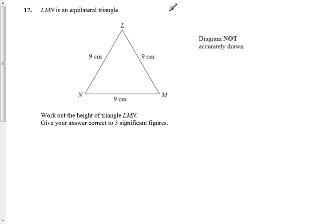Okay, so here we go with the problem. We've got an equilateral triangle, which means all of the sides are the same. In fact, it also tells us all the angles are 60 in case we need it. It asks us to work out the height of the triangle, giving our answer correct to three significant figures.